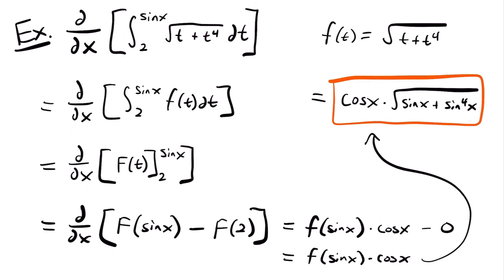To find the final answer, we plug sine x into our function f of t, and our answer will be cosine x times the square root of sine x plus sine to the fourth power x. A quick method would be to plug sine x into each t in the integrand and then multiply by the derivative of the bound, cosine x.